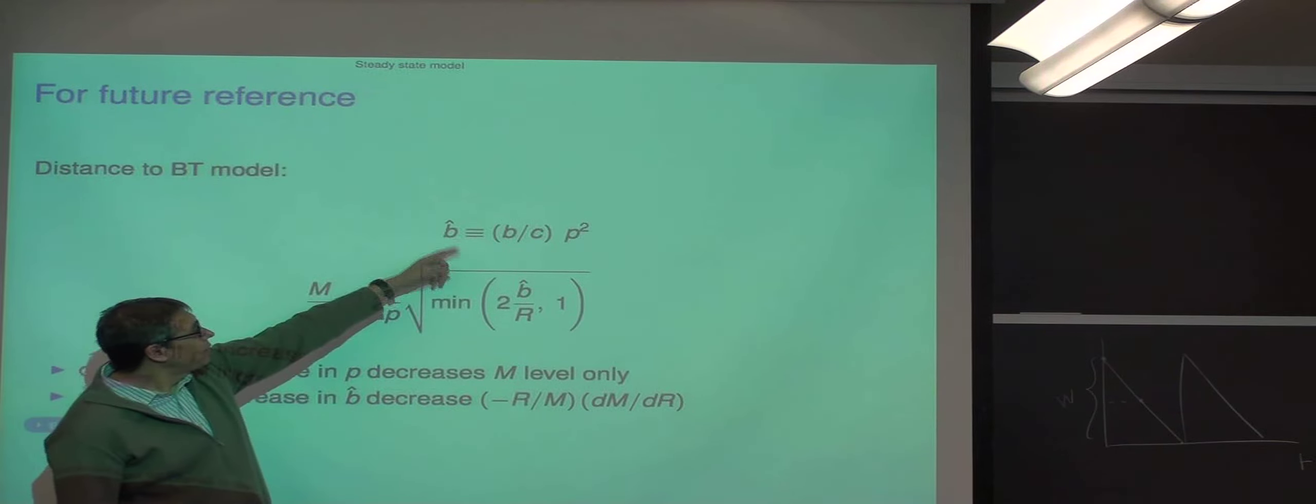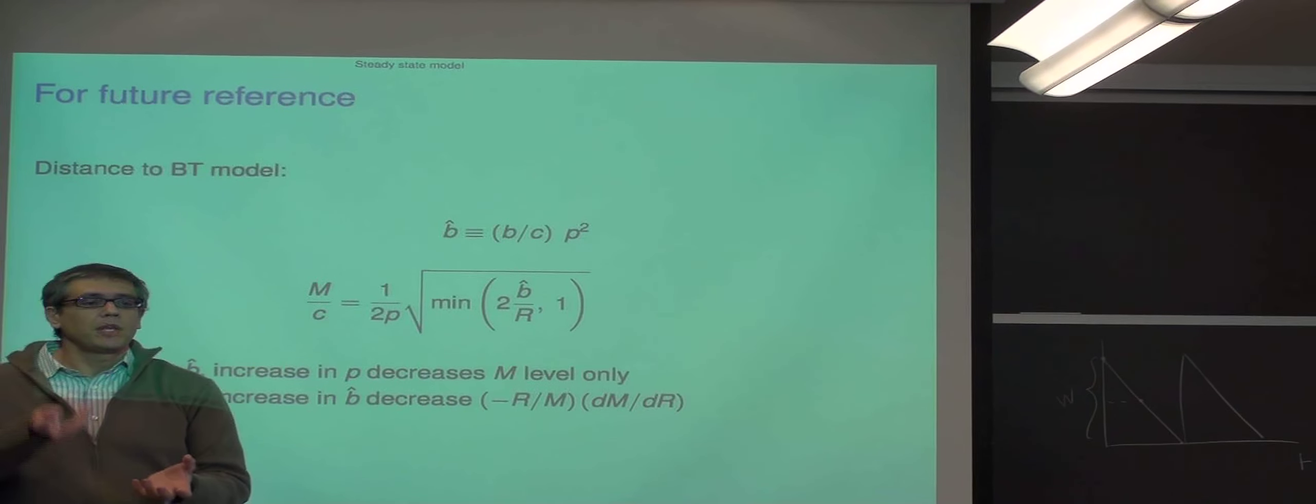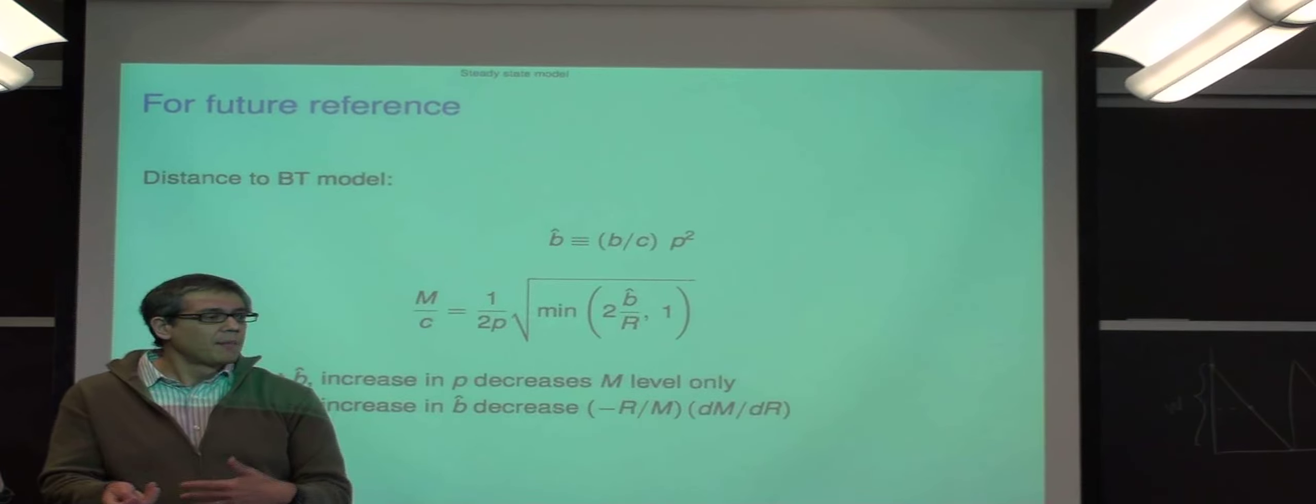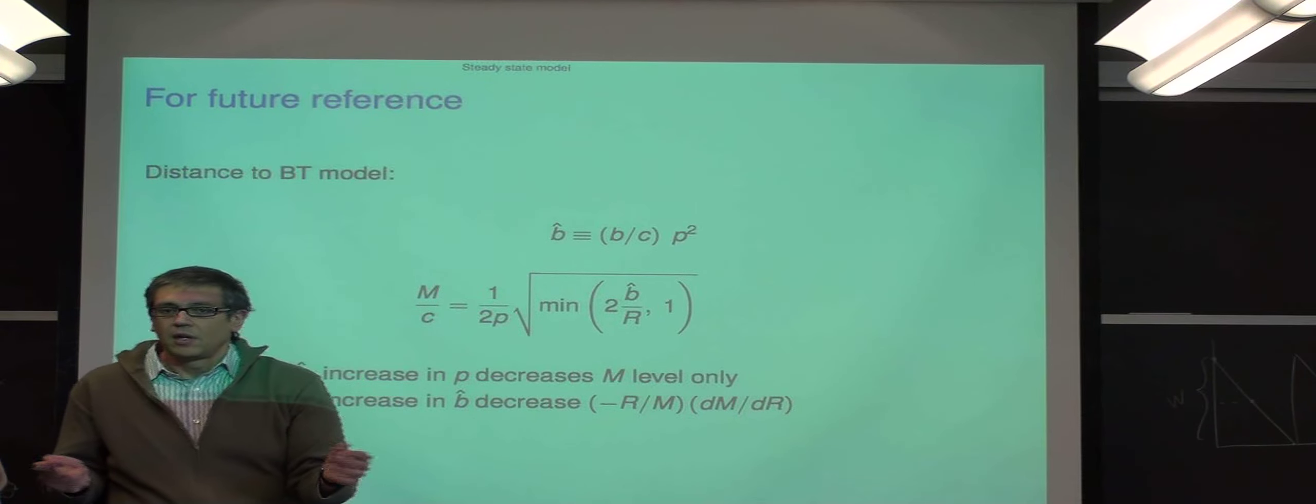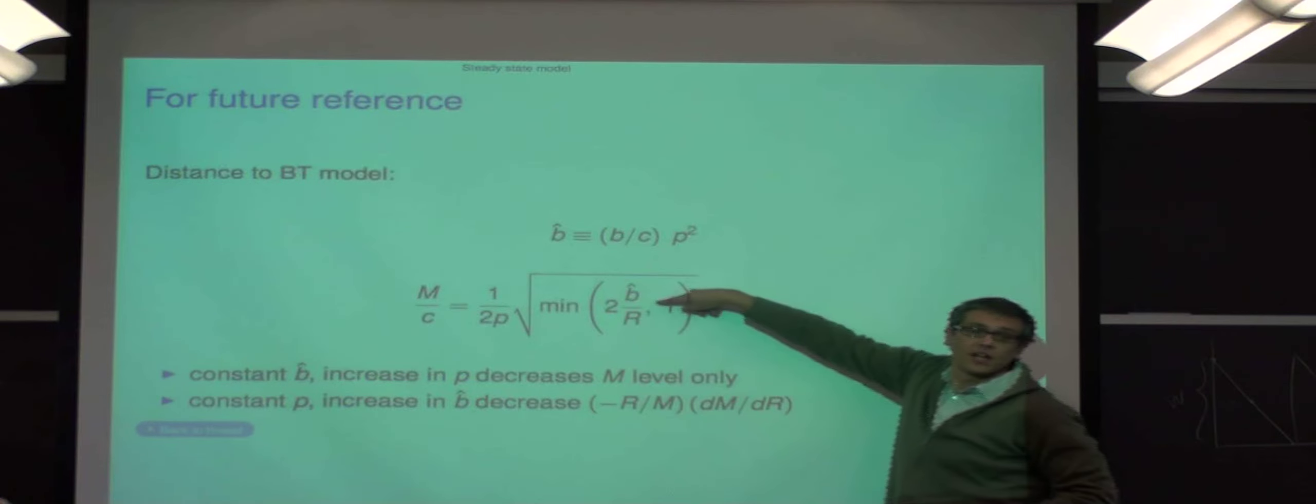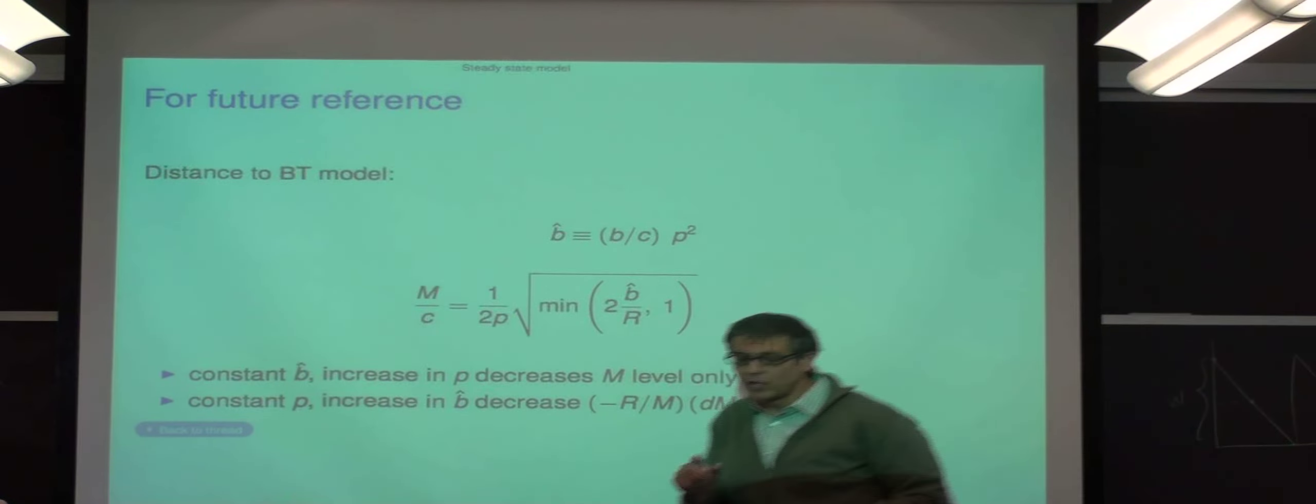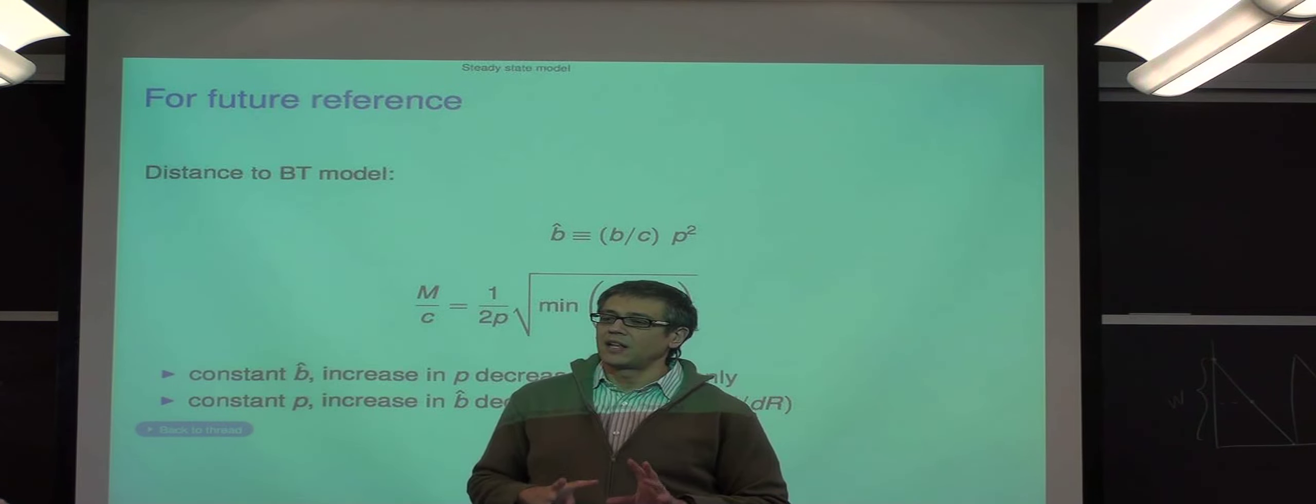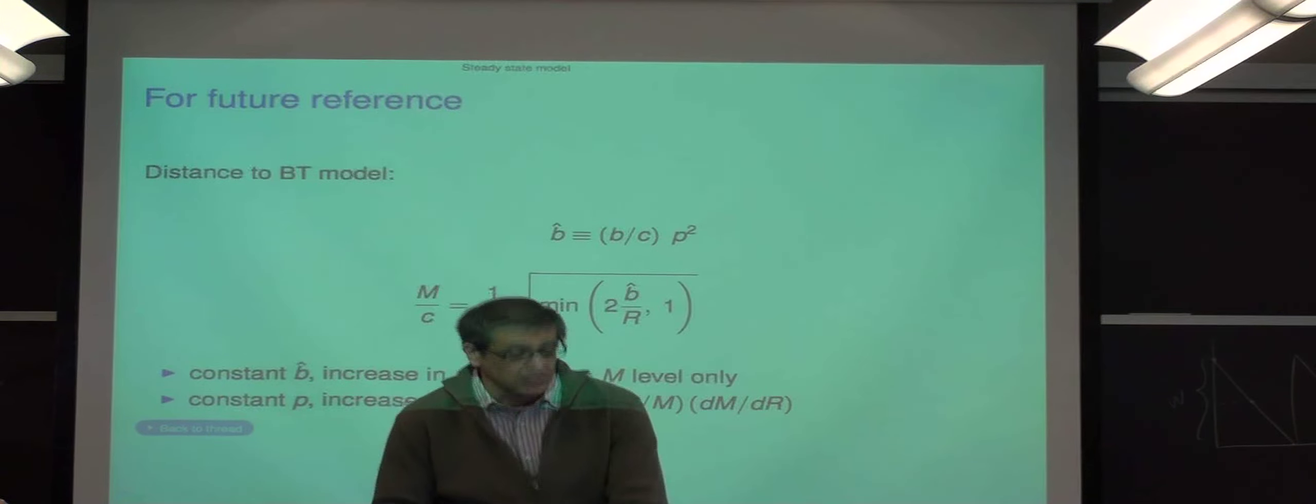And this rotation is interesting because notice that if you keep B hat fixed, but you change P, you have purely a level effect on the money demand. But if you change B hat, you have a change on the shape of the money demand. And in particular, the two ways of technological progress are probably a decrease in B. It costs you less to go to the bank if you have to, but also there are more of these free withdrawal opportunities because there's more density of banks and ATMs.